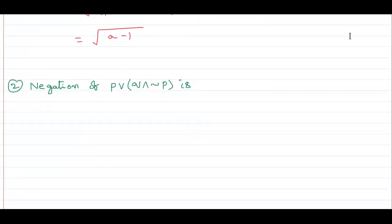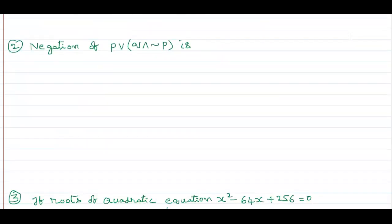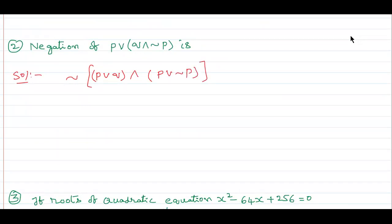Second question. You see the negation of (P or Q) and (minus P). So they are asking the negation of: negation of and — apply this negation of AND. Now apply the negation: what happens?